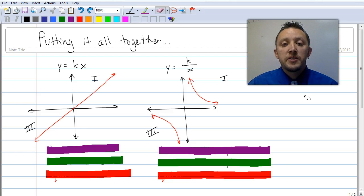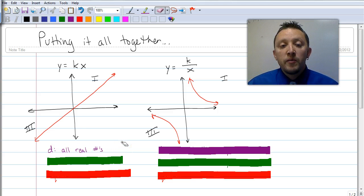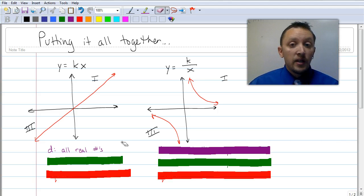Let's look at some other relationships that exist here. Let's look at the domains. The domain for the first graph, y equals k times x. Think about what that is. That's going to be all real numbers. It goes infinitely in both directions. It includes every point, going infinitely to the left and infinitely to the right. Well, what's the domain in the second graph?